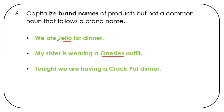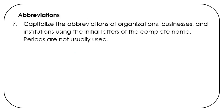"Tonight we are having a Crock-Pot dinner" — Crock-Pot gets its name from a specific brand name, so we capitalize it, but not dinner. Abbreviations: capitalize the abbreviations of organizations, businesses, and institutions using the initial letters of the complete name. Periods are not usually used.